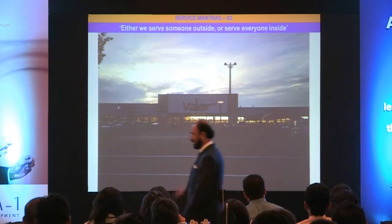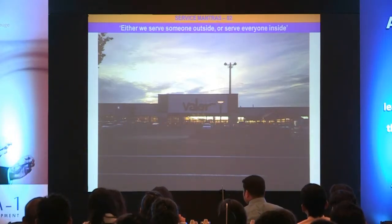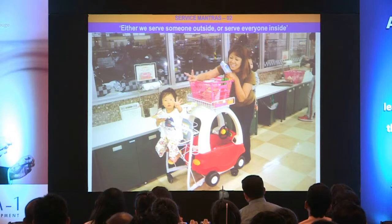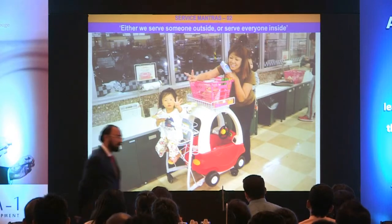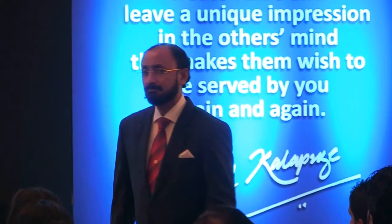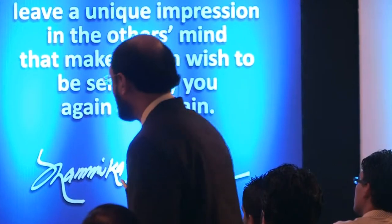Look at this. This is Valor's supermarket, which I happened to see in Japan. I walked into this supermarket and saw this buggy, a little baby, and the lady. Here is the question: who is influencing the mother to go to Valor's supermarket? The child. Every time she passes by, the child must be saying, 'Mama, hungry, thirsty, take me there.'